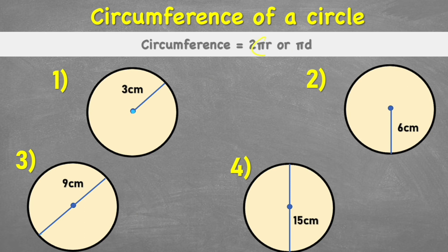But what is pi? Pi is defined as the ratio between the circumference and the diameter. There are lots of videos that go much further into what pi is and how it's measured, but we're going to focus on how we use pi to calculate the circumference of a circle.